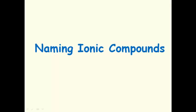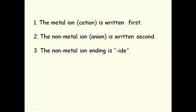Naming ionic compounds. The rules for naming ionic compounds are pretty straightforward. The metal ion or cation, that is the positive ion, is written first.